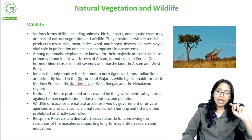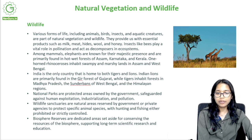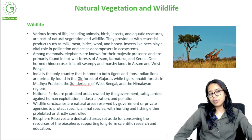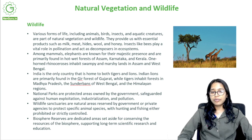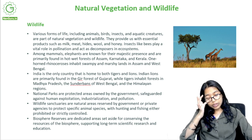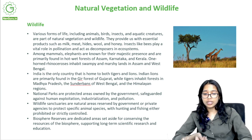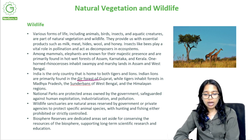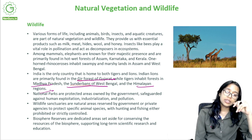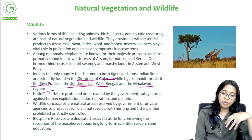Wildlife includes various forms of life — animals, birds, insects and aquatic creatures — as part of natural vegetation and wildlife. They provide us with essential products such as milk, meat, hides, wool and honey. Insects like bees play a vital role in pollination and act as decomposers in ecosystems. Among mammals, elephants are known for their majestic presence and are primarily found in the hot wet forests of Assam, Karnataka and Kerala. One-horned rhinoceros inhabit swampy and marshy lands in Assam and West Bengal.